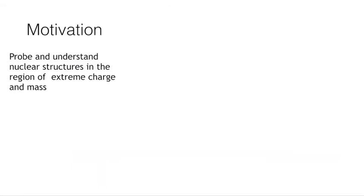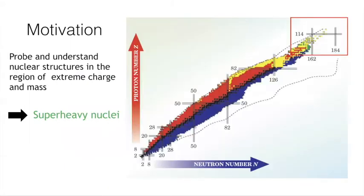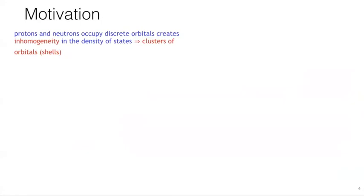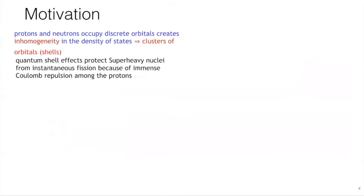The motivation is we want to understand how the nuclear force behaves when both charge and mass are extreme. This type of nuclei are generally known as the super-heavy nuclei. If we look at the familiar nuclear chart where nuclei are plotted as a function of their proton number and neutron number, the super-heavy nuclei are located at the very top. The protons and neutrons inside the nucleus occupy discrete orbitals, creating inhomogeneity in the density of states. We call this clustering of orbitals shell structure.